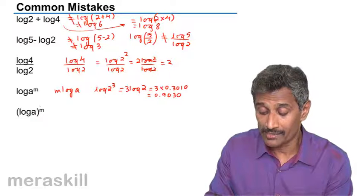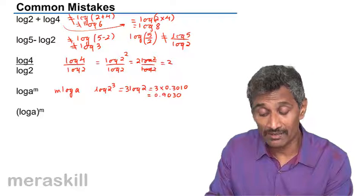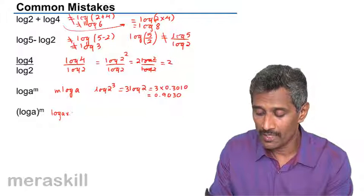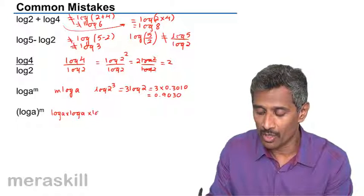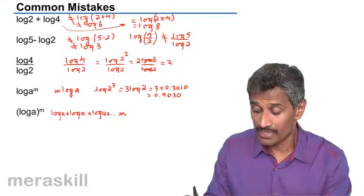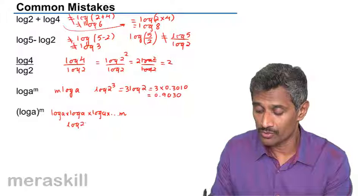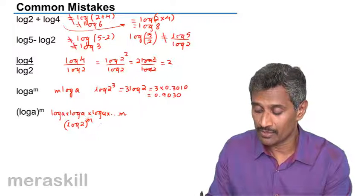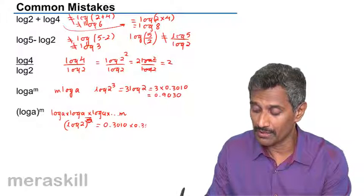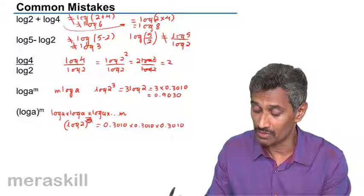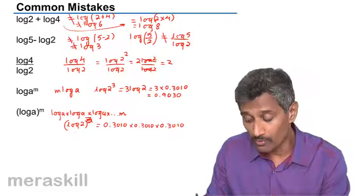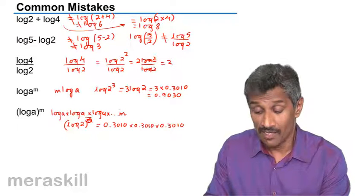Whereas (log a) the whole raised to m means even the logarithm is raised to the power m — here only a has been raised to m. So (log a)^m means log a × log a × log a, m times. For example, (log 2)³ would mean 0.3010 × 0.3010 × 0.3010, which is definitely not the same as 3·log 2. You have to multiply the whole value of log 2 by itself three times.